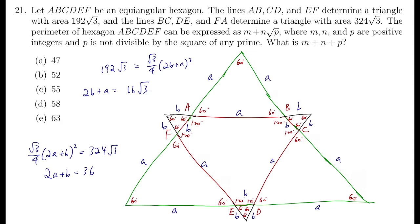Now the perimeter of the hexagon itself is 3A plus 3B. And that can be achieved by adding up these two equations. So add them up. 3A plus 3B equals 36 plus 16 root 3. So the answer M plus N plus P is just 36 plus 16 plus 3. And the answer is C, 55.